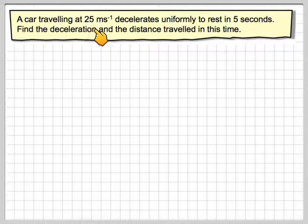A car travelling at 25 metres per second decelerates uniformly to rest in 5 seconds. Find the deceleration and the distance travelled in this time.